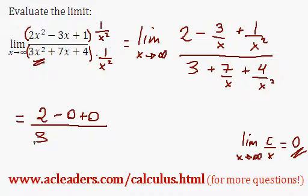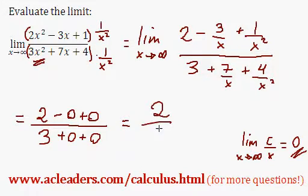The limit as x approaches infinity for 7 over x is just 0, and finally the limit as x approaches infinity for 4 over x squared is also 0. Final answer: 2 over 3.